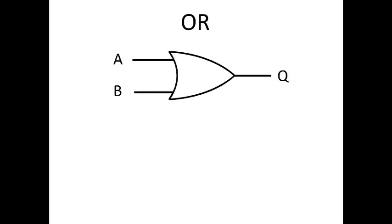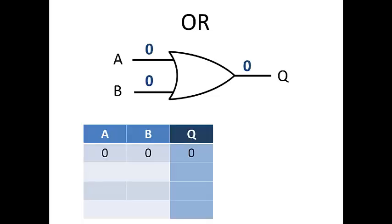Next we'll cover the OR gate. An OR gate can have two or more inputs. Our example here will show with two inputs, A and B, and one output, Q. When we input two 0's, we get a 0 output. Q will be positive, or 1, whenever either A or B is 1.